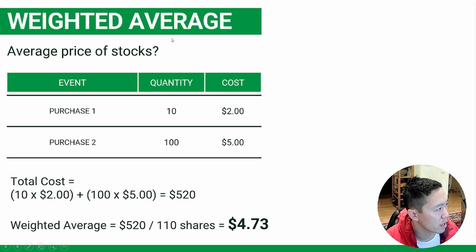All right, one last example for weighted average, average price of stocks. Let's just say you bought a bunch of stocks and you want to know what the average price is. What you'd have to do is separate out the different purchase events by the quantity and the costs, and then once again, do the sum product.